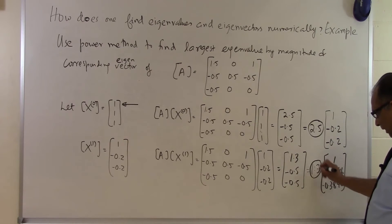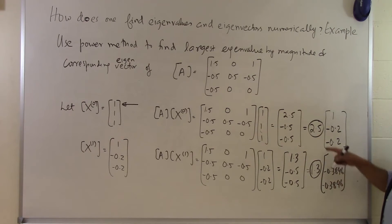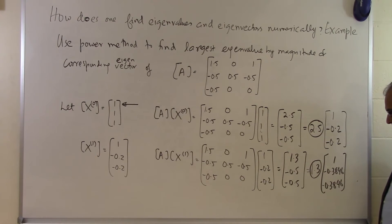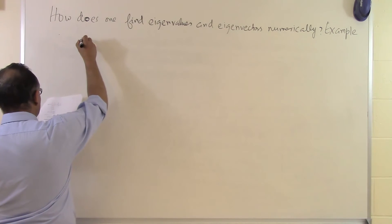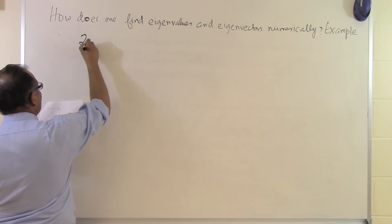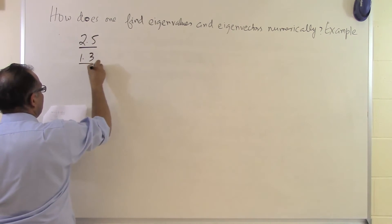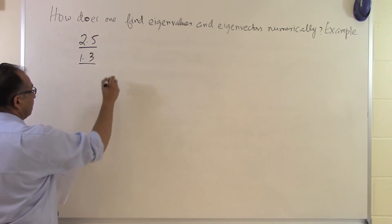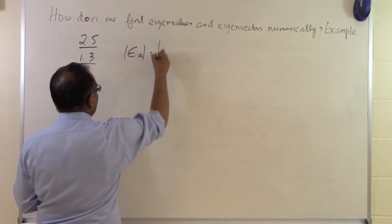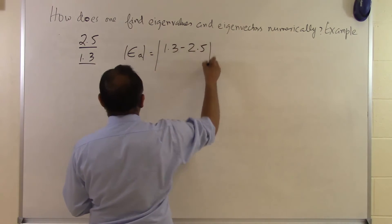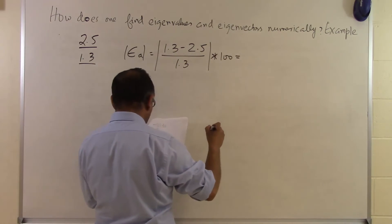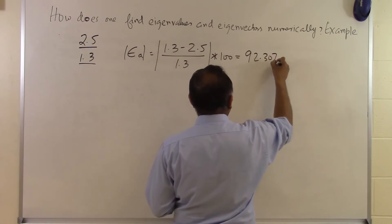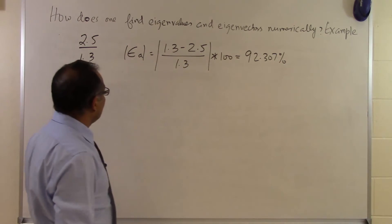This gives our second eigenvalue estimate as 1.3, with eigenvector [1, -0.3846, -0.3846]. We can now compute the relative approximate error: (1.3 - 2.5) / 1.3 × 100 = 92.307%. That is a large error, so we must keep iterating until the error falls below the pre-specified tolerance.